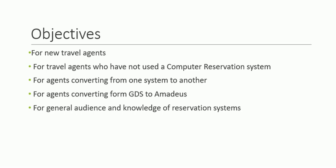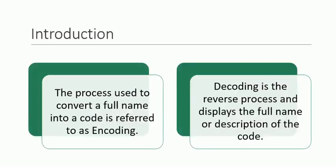Basically, when we are talking about Amadeus encoding airport codes or different codes, encoding is the process to convert a full name into its code, and we will see further examples in our next slide. Decoding is the reverse process and displays the full name or description of the code. So in encoding we have the full name and convert it into a short code, and in decoding we convert the code back into the full name.